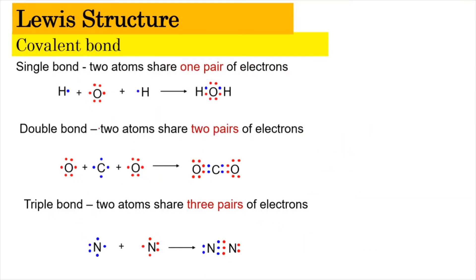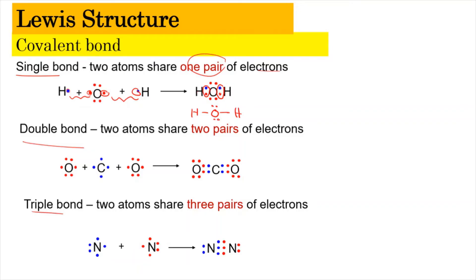Now let's look at the formation of single, double, and triple bonds. A single bond is formed when two atoms share one pair of electrons. As you can see here, the blue-colored electron from one atom shares with the red-colored electron from oxygen, and similarly on the other side — blue and red form one single bond. The lone pairs remain unchanged. This is the more popular way of writing the Lewis structure of the covalent bond, representing a single covalent bond.